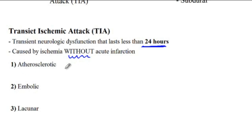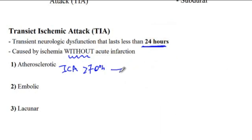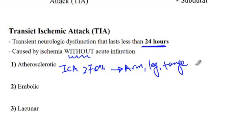With the atherosclerotic TIA, it's usually caused by the occlusion of the internal carotid artery. If it's more than 70% occlusion, then there is an increased risk of TIA. These patients usually present with arm, leg, and tongue numbness, as well as eyelid drooping. But the symptoms only last for minutes, and so by the time they arrive to the emergency department, the symptoms are usually resolved.